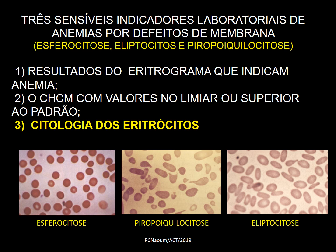Três sensíveis indicadores laboratoriais de anemias por defeito de membrana: esferocitose, eliptocitose e piropoiquilocitose, representados nas fotos. Quando você analisa o resultado do eritrograma, os três casos têm anemias geralmente discretas até moderadas. Um detalhe fundamental é que a CHCM — concentração de hemoglobina corpuscular média — tem valores no limiar ou superior ao padrão. Na esferocitose, mais de 25% dos eritrócitos são esferócitos.